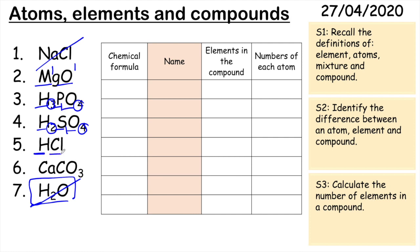Like this example here. There's hydrogen and chlorine. But because there's no number either side, we have one hydrogen and one chlorine.